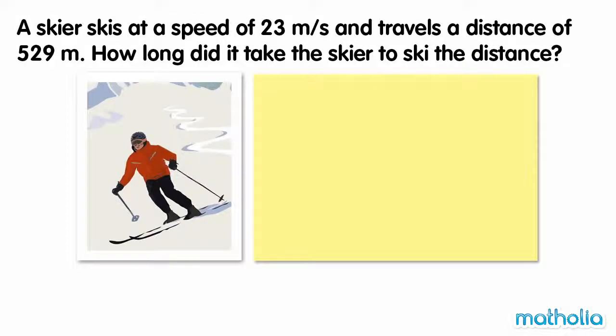A skier skis at a speed of 23 metres per second and travels a distance of 529 metres. How long did it take the skier to ski the distance?